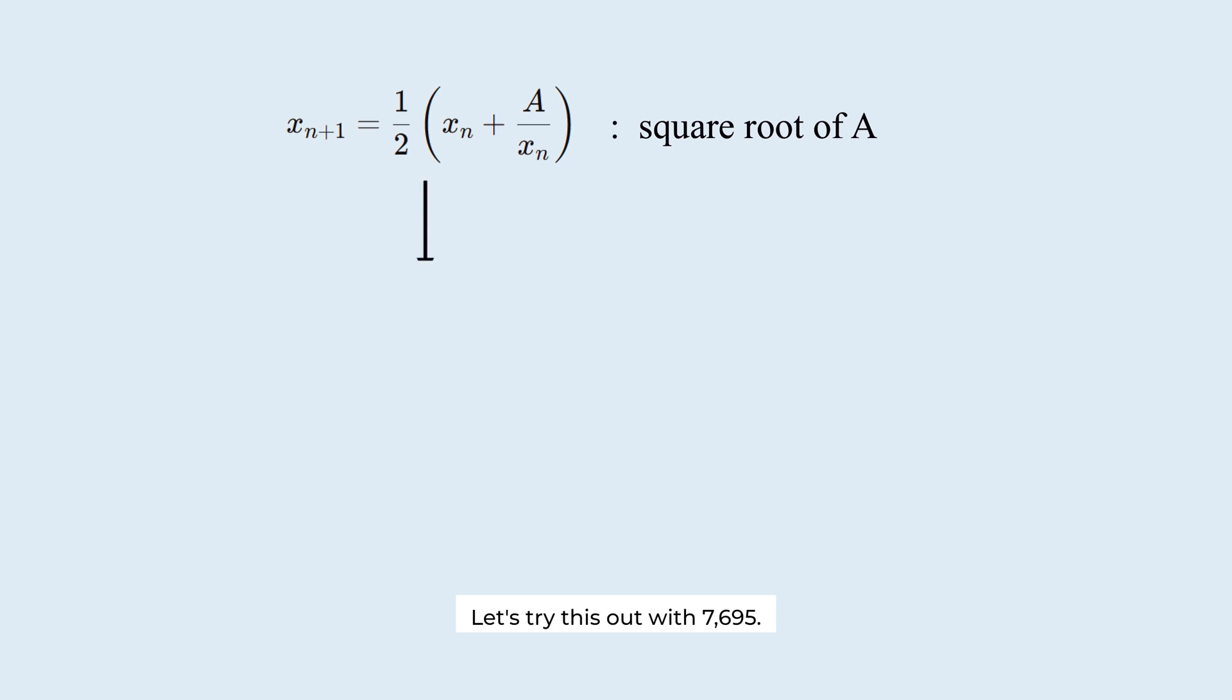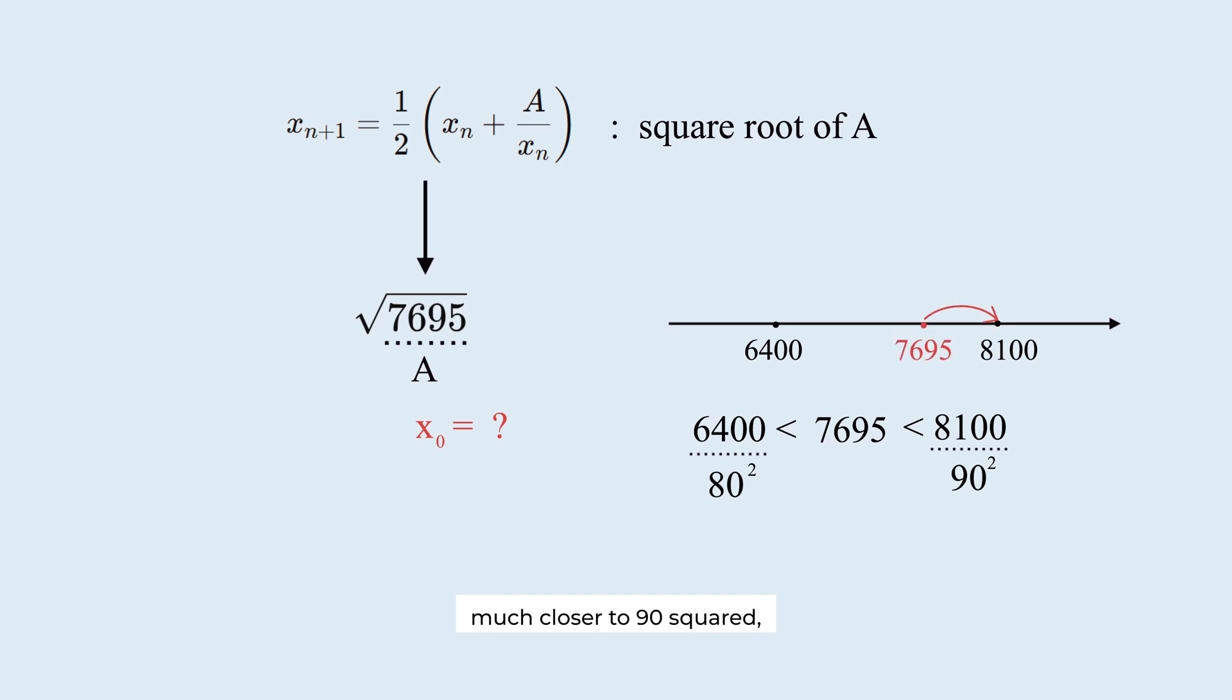Let's try this out with 7,695. That's our A value. Now we need a starting guess. This number is greater than 6,400, which is 80 squared, and less than 8,100, which is 90 squared. Since this number is much closer to 90 squared, 90 would be a better initial guess. However, we'll use 80 to test the formula.